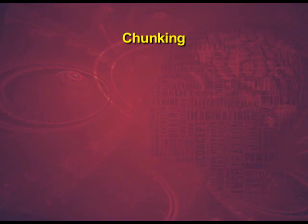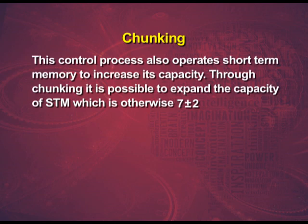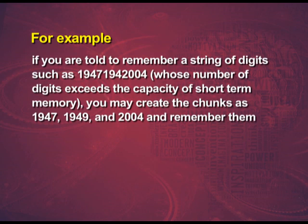Chunking is a control process that operates in short-term memory to increase its capacity, which is otherwise 7 plus or minus 2. For example, if you are told to remember a string of digits such as 1 9 4 7 1 9 4 2 0 0 4, whose number of digits exceeds the capacity of STM, you may create chunks as 1947, 1942 and 2004 and remember them.